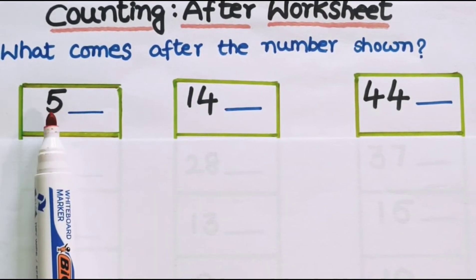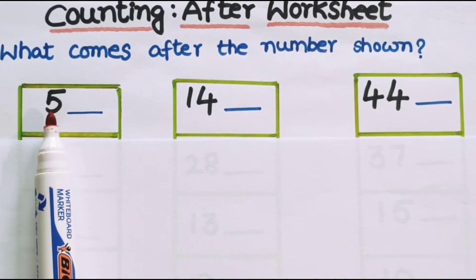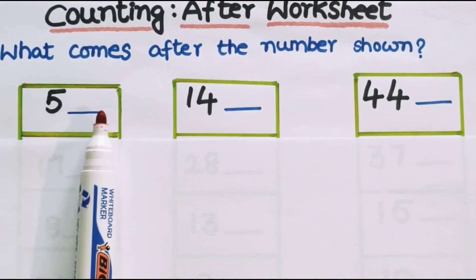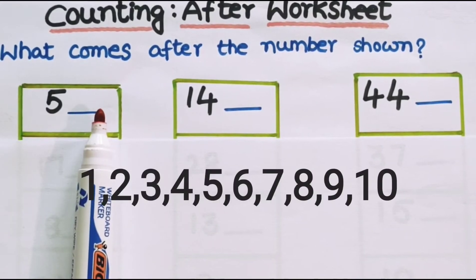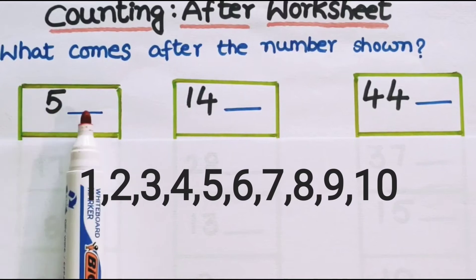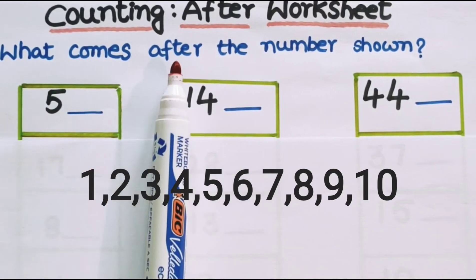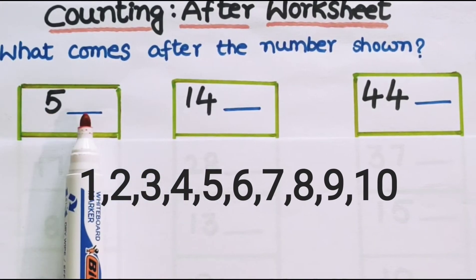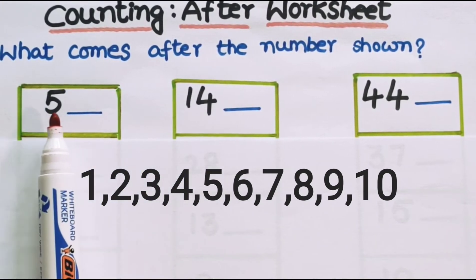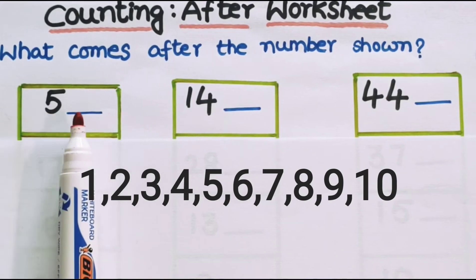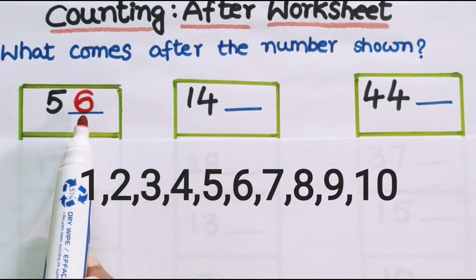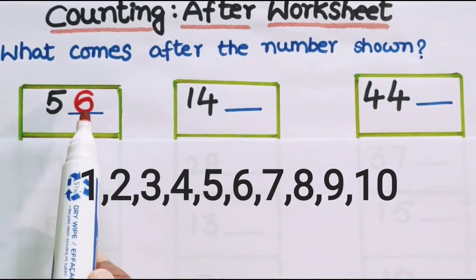The first number is 5. The blank is on the right side, so if we count on the right side of the number line, what number comes after 5? We have to count forward. After numbers are forward numbers, so we have to go for forward counting. If we count forward after 5, what number comes? Yes, you are right — it is 6. After 5, 6 comes.